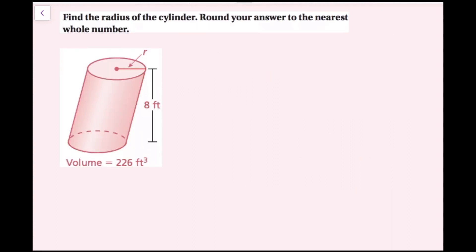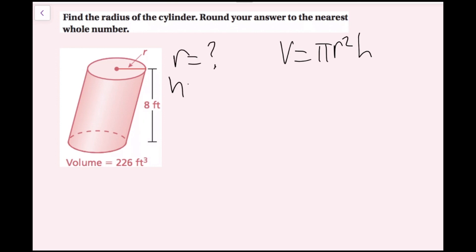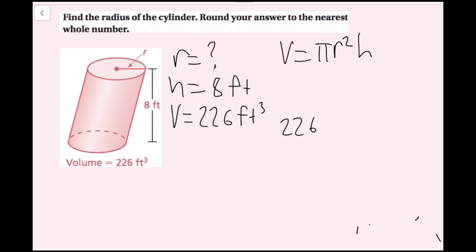For this example, we're going to find the radius of the cylinder and round our answer to the nearest whole number. I have an oblique cylinder here, and that's fine — the formula is the same. I'm given my height and my volume, so I just have to find the radius. The formula is V equals pi R squared H, with R unknown, H equals 8 feet, and the volume is 226 cubic feet.